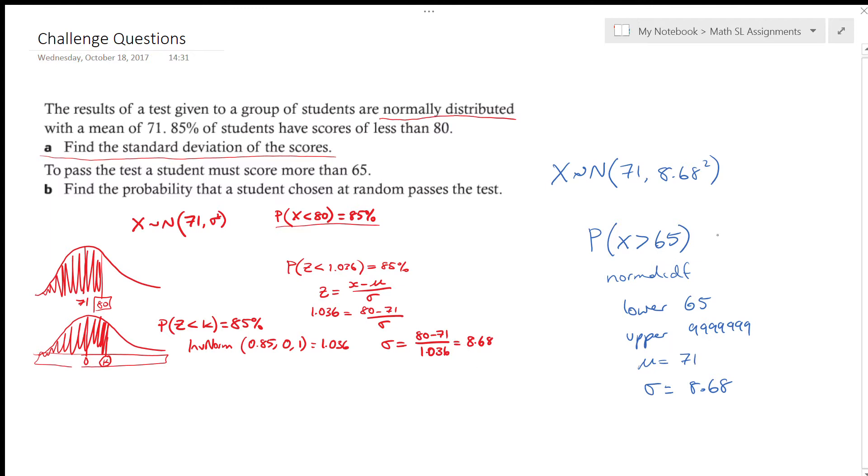And we get that our probability is 0.755, so you could also write that as 75.5%, okay.